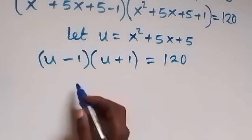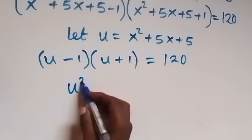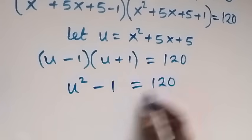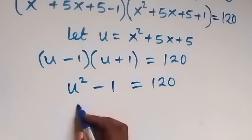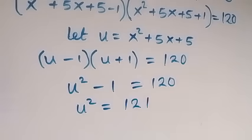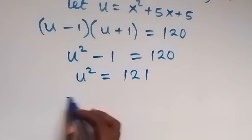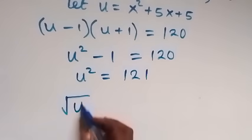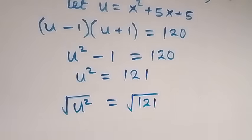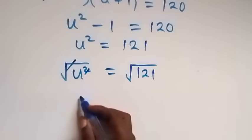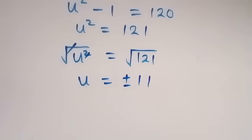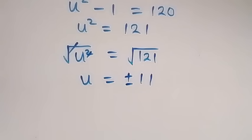That is, u minus 1 times u plus 1 is the same as u squared minus 1, which equals 120. Taking minus 1 to the other side becomes plus, so we have u squared equals 121. Taking the square root on both sides, square root of u squared equals square root of 121, and square cancels square root, giving u equals plus or minus 11.